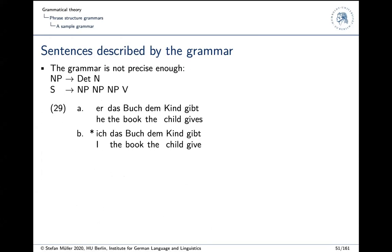So this is the set of rules we have. And the question is what is wrong with them? So what we get is for example, we get as we just saw 'er das Buch dem Kind gibt', but we also get 'ich das Buch dem Kind gibt', which is wrong. There is some problem. You can think about it. I pause for a second. Or you press pause. So what is wrong with 29b?